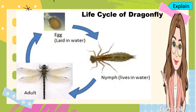The last example is the life cycle of a dragonfly. First, it will lay an egg in water. Then, after a few weeks, it will turn into a nymph. After a few more weeks, it will also turn into an adult dragonfly. As stated, the cycle will start all over again.